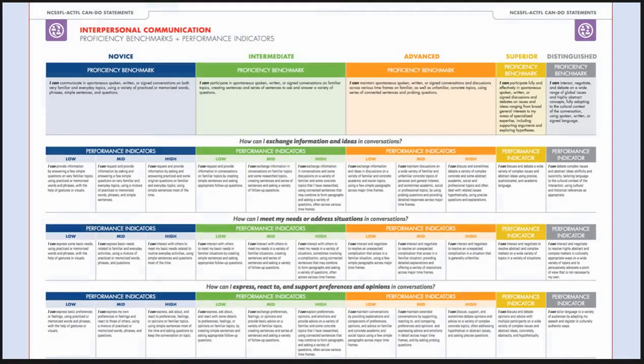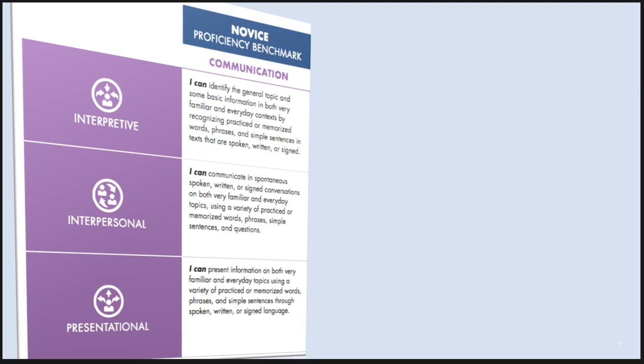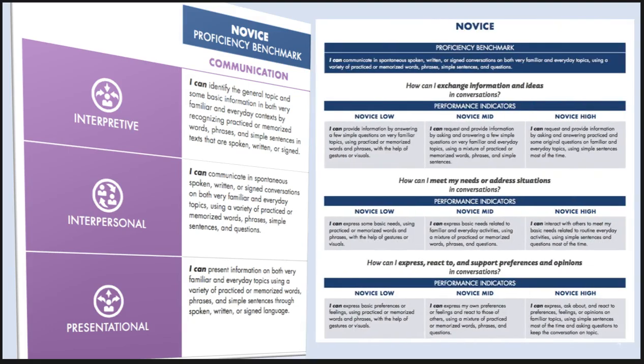Let's look at the format of the 2017 revised Can-Do Statements. The revised statements identify proficiency benchmarks and performance indicators from novice to distinguished for each mode of communication. Here you see the proficiency benchmarks for novice for the interpretive, interpersonal, and presentational modes of communication. Each mode of communication is further explained, first with questions that provide a language function, and then with performance indicators showing how well that function is addressed.